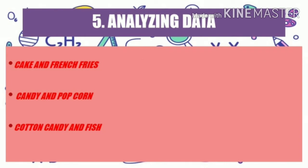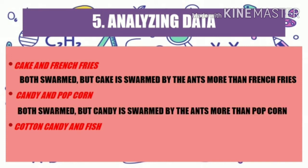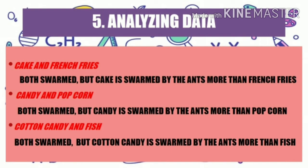The result of the first pair of foods tested: both were swarmed, but cake was swarmed by ants more than french fries. The result of the second pair: both were swarmed, but candy was swarmed more than popcorn. The result of the third pair: both were swarmed, but cotton candy was swarmed more than fish. Analyzing the data, cake, candy, and cotton candy — the sweet foods — were swarmed more than the others. However, french fries, popcorn, and fish were still swarmed by the ants.